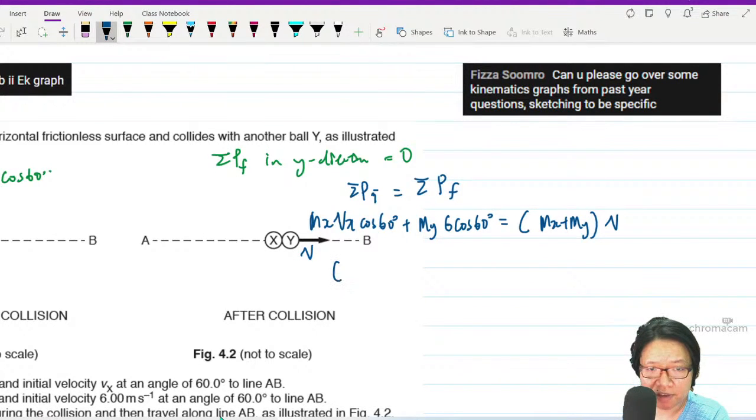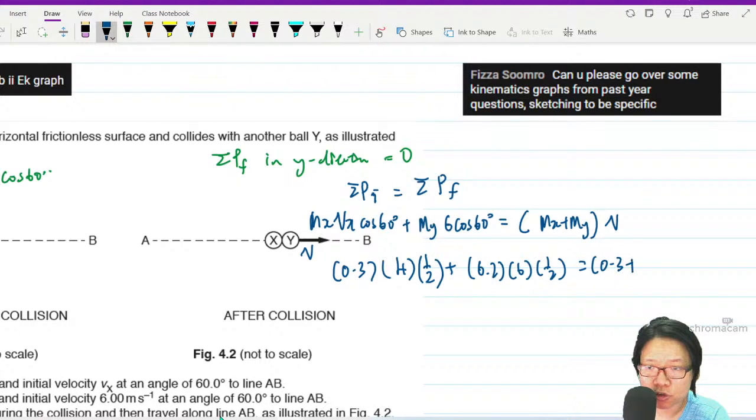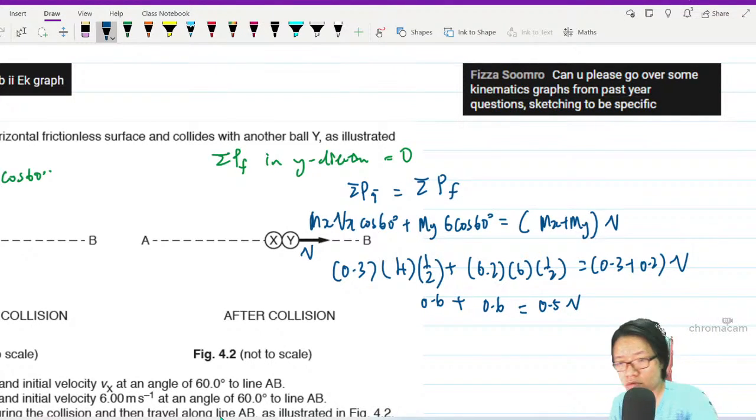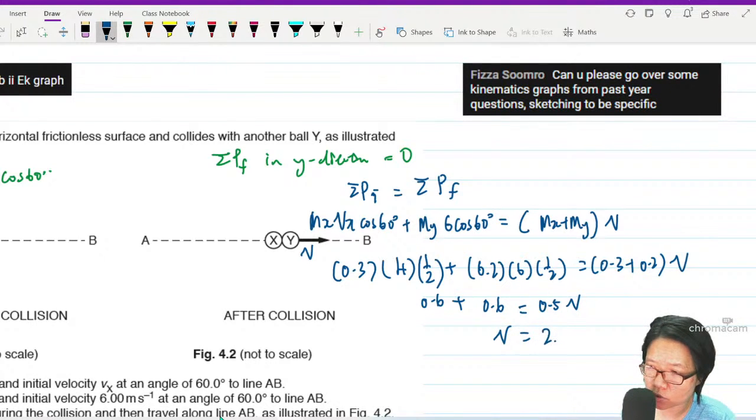So we have Mx 0.3, Vx we calculated is 4, cos 60 is half. My is 0.2, 6, cos 60 is half. 0.3 plus 0.2 times V. So you simplify this one, this will be 0.6. You simplify this one, this will be 0.6 as well. This is 0.5V. 1.2 divided by 0.5, V would be 2.4 meter per second.